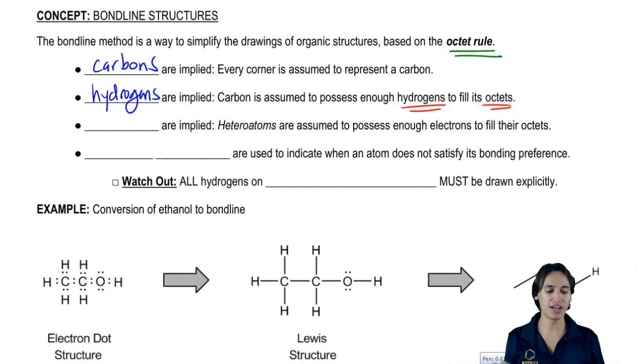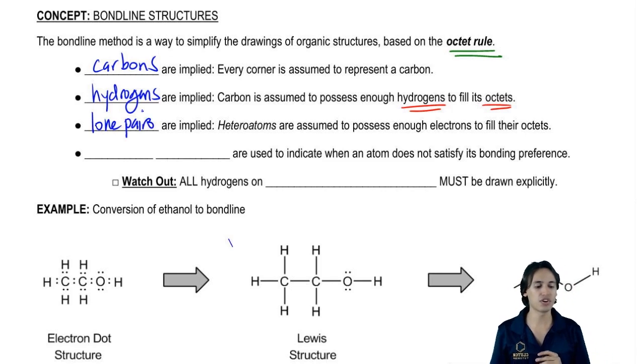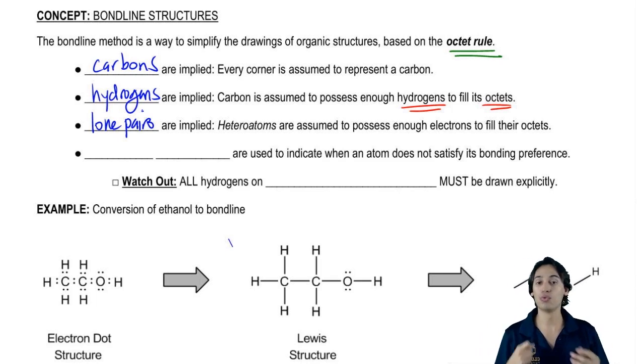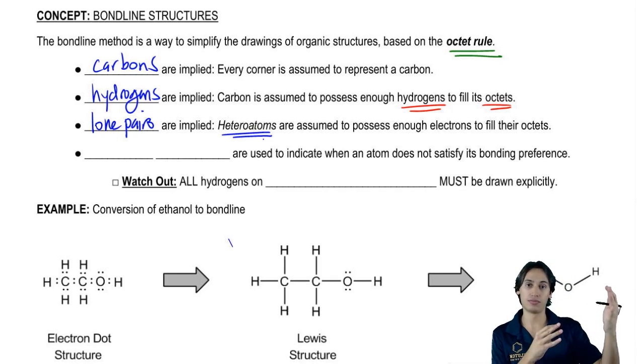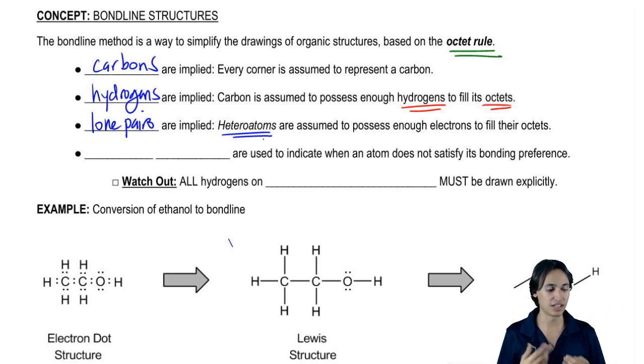What else is implied? Lone pairs, because lone pairs would be super repetitive too. Lone pairs are implied. What that means is that we're not going to draw all the lone pairs. We're just going to assume that heteroatoms will have enough lone pairs to fulfill their octet unless otherwise stated, unless there's a charge.